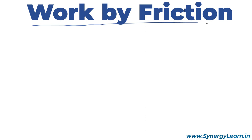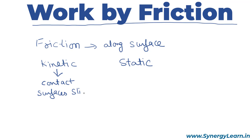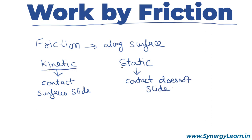Work is done by friction. Friction is a contact force which acts along a surface. Friction is of two types: kinetic and static. Kinetic friction is one in which contact surfaces slide on each other. Static friction is one in which contact surfaces do not slide. Kinetic and static friction can do negative, positive, or zero work. Let us illustrate this using a few examples.